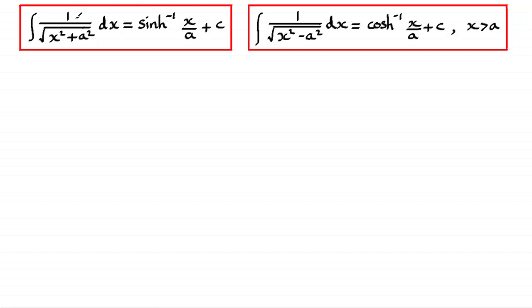You can see the integral of 1 over the root of x squared plus a squared integrated with respect to x, where a is a constant, was equal to the inverse sinh of x over a plus a constant of integration.